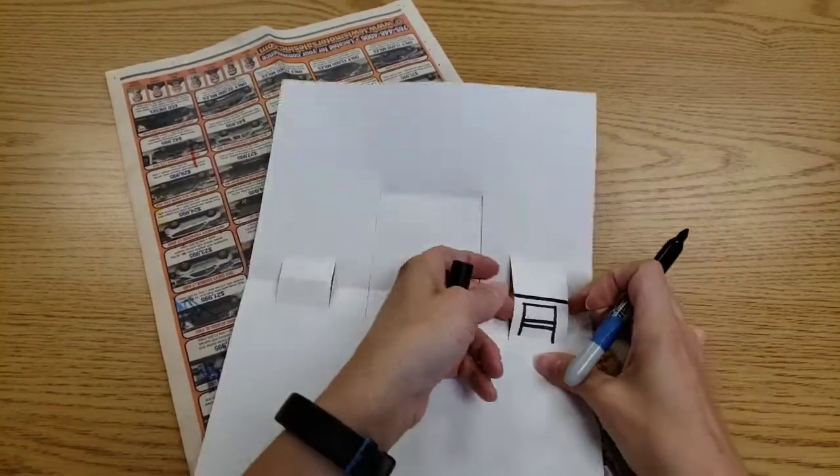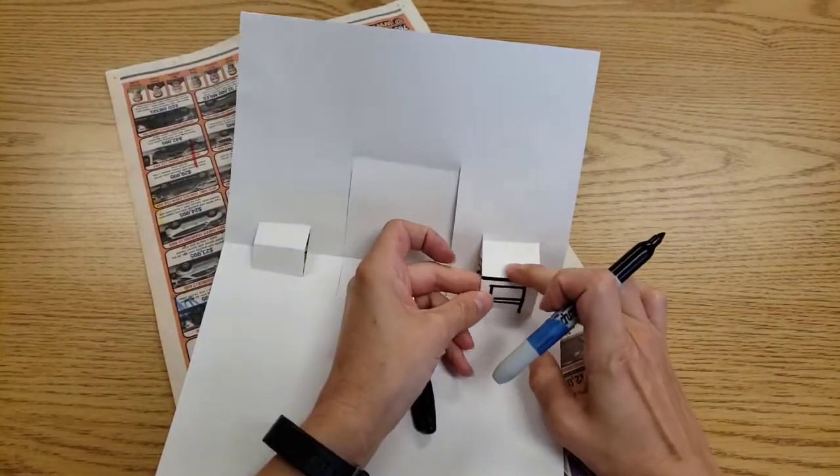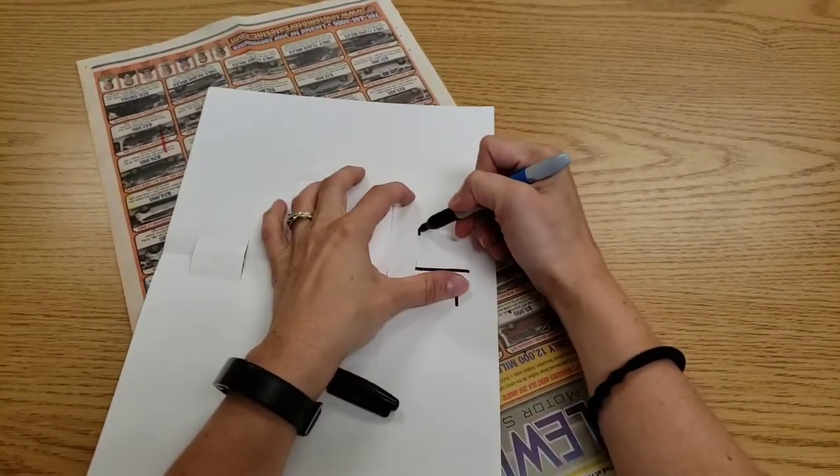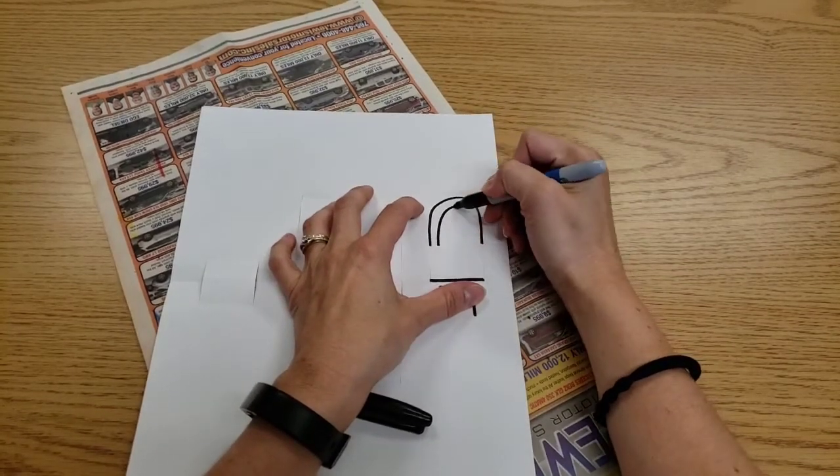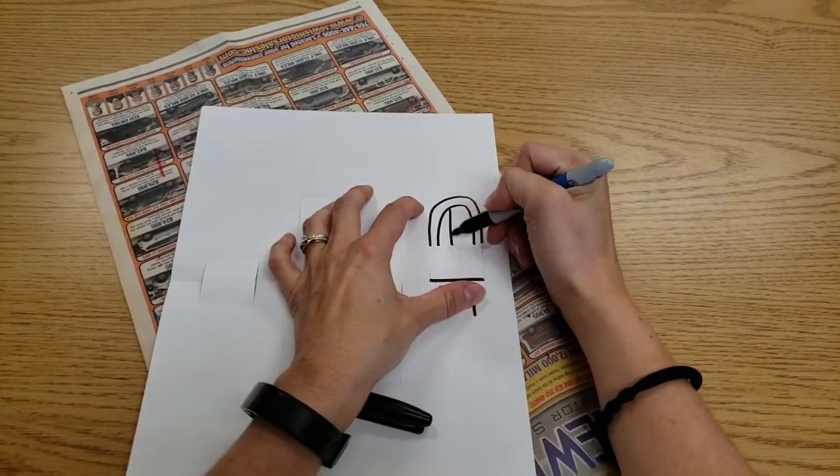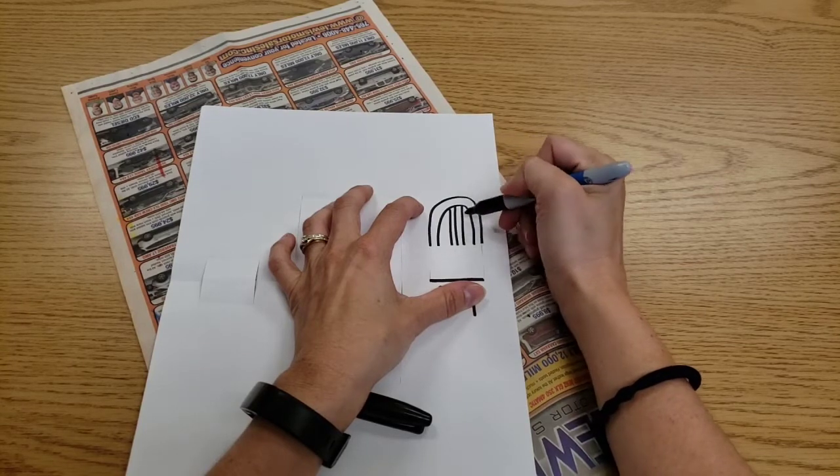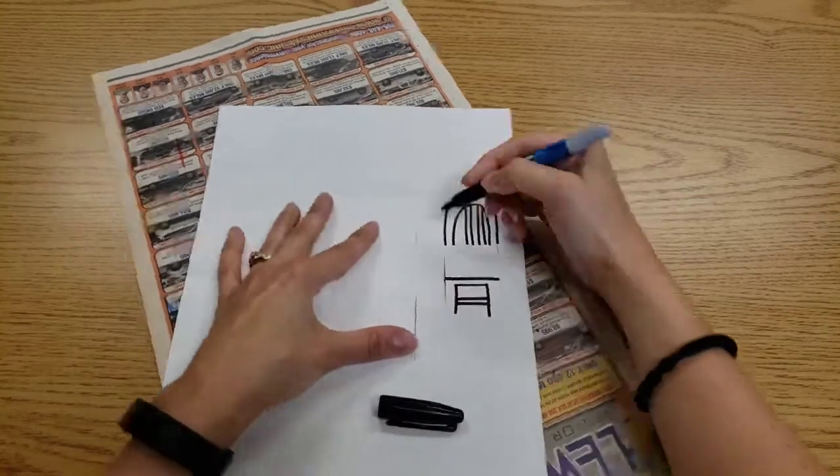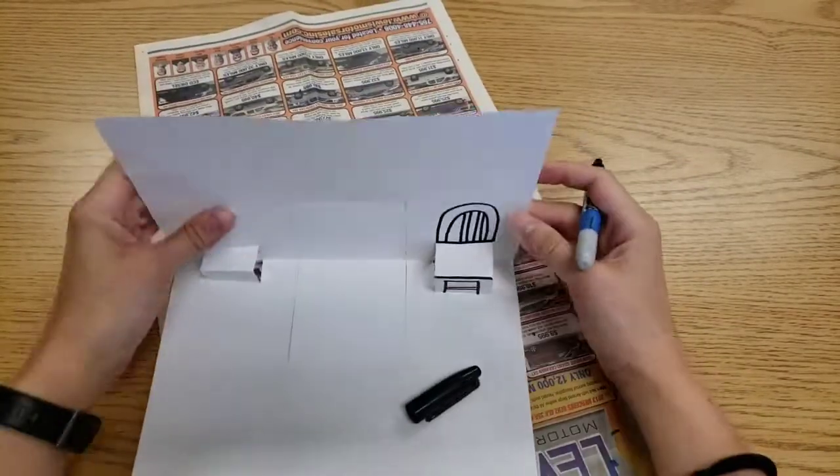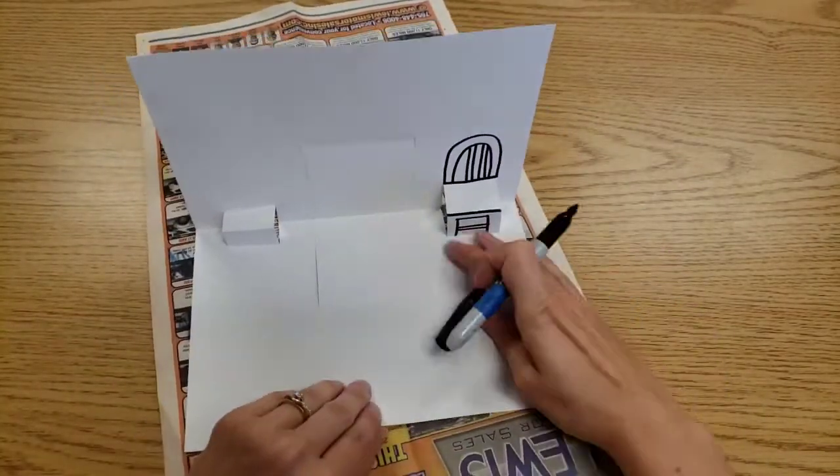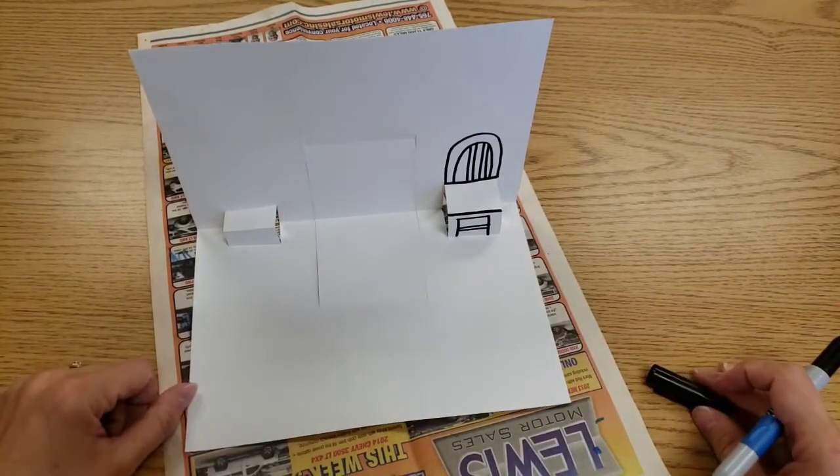And then the back of the chair doesn't go here. That's the part you sit on. The back of the chair would be back here. I'm making the line stop at the seat. So now if I stand this up we have a little 3D chair to sit on.